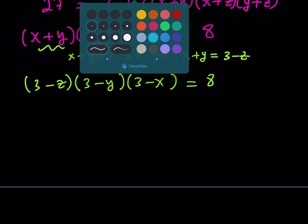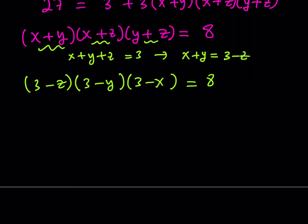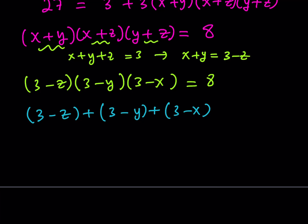The other expression I want to use: can I get the sum of these three quantities (3 − x) + (3 − y) + (3 − z)? Absolutely — this equals 9 minus (x + y + z) = 9 − 3 = 6. So I need three integers whose product is 8 and whose sum is 6.